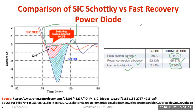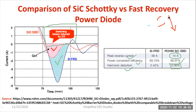EMI — electromagnetic interference — issues are also minimized in the case of SiC type power diode. You can collect this information by downloading the datasheet. At the end of the presentation, I'll be showing the datasheet of the particular company.